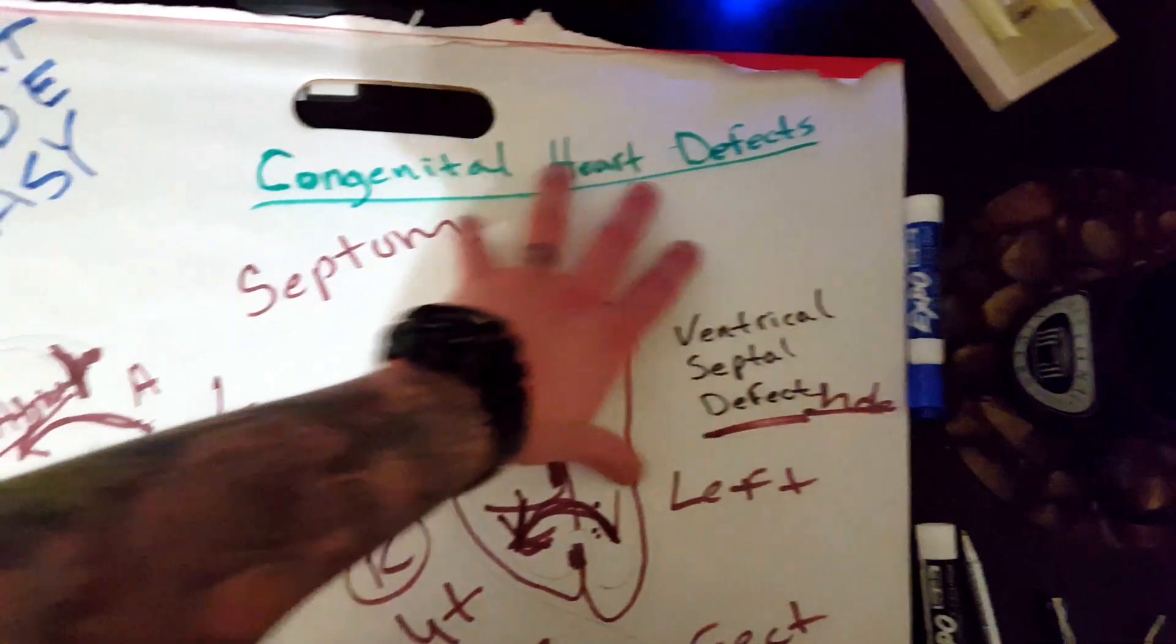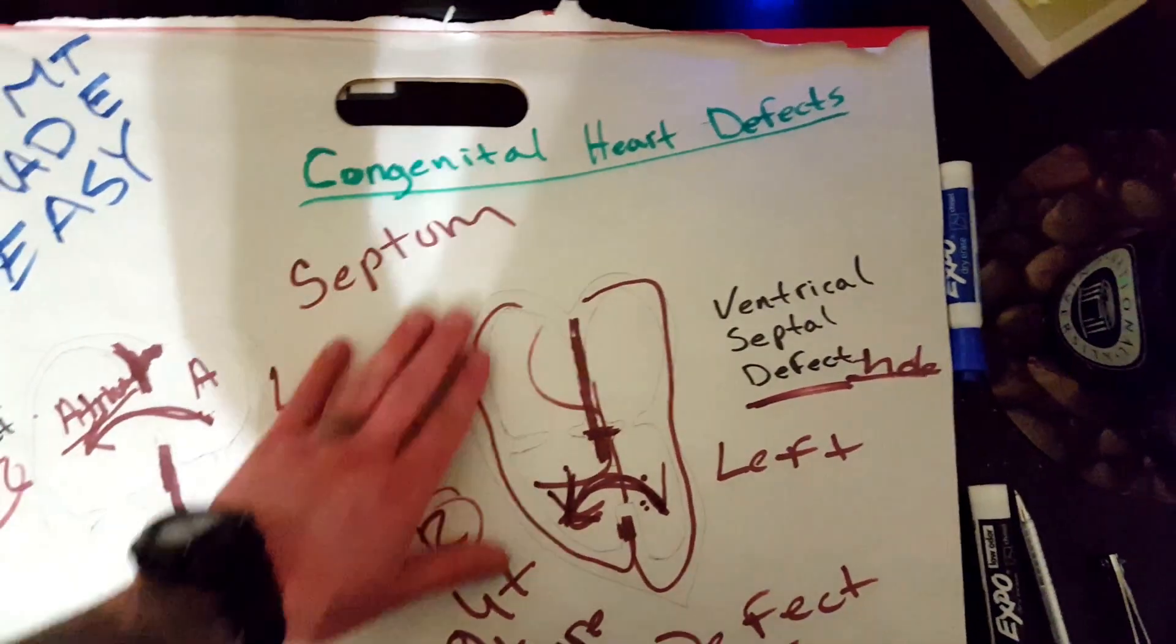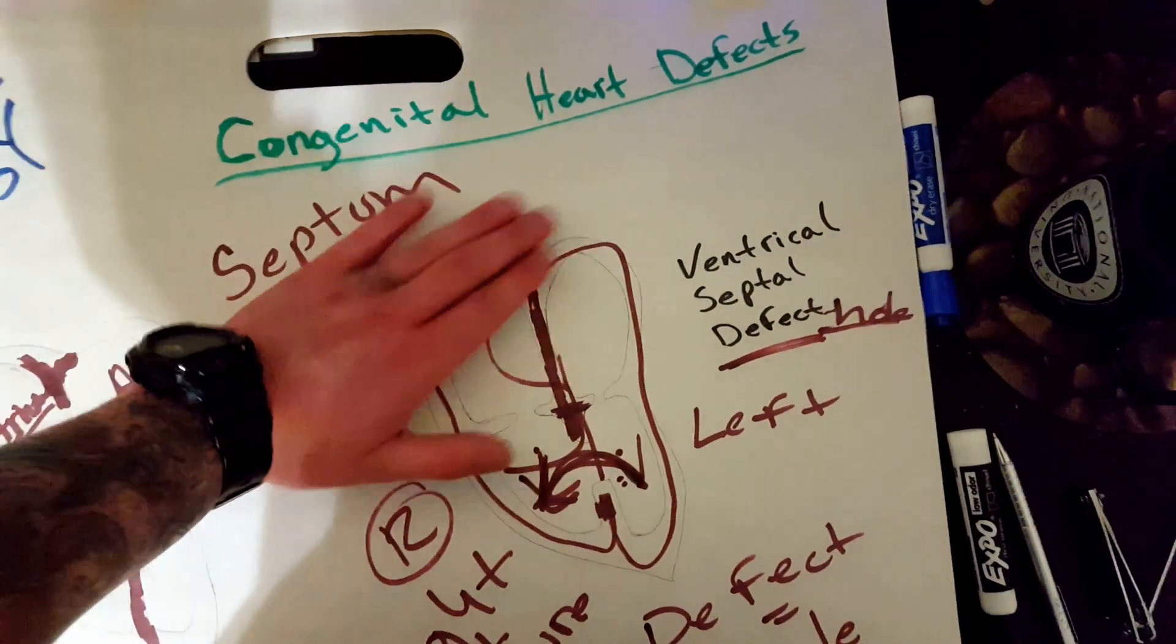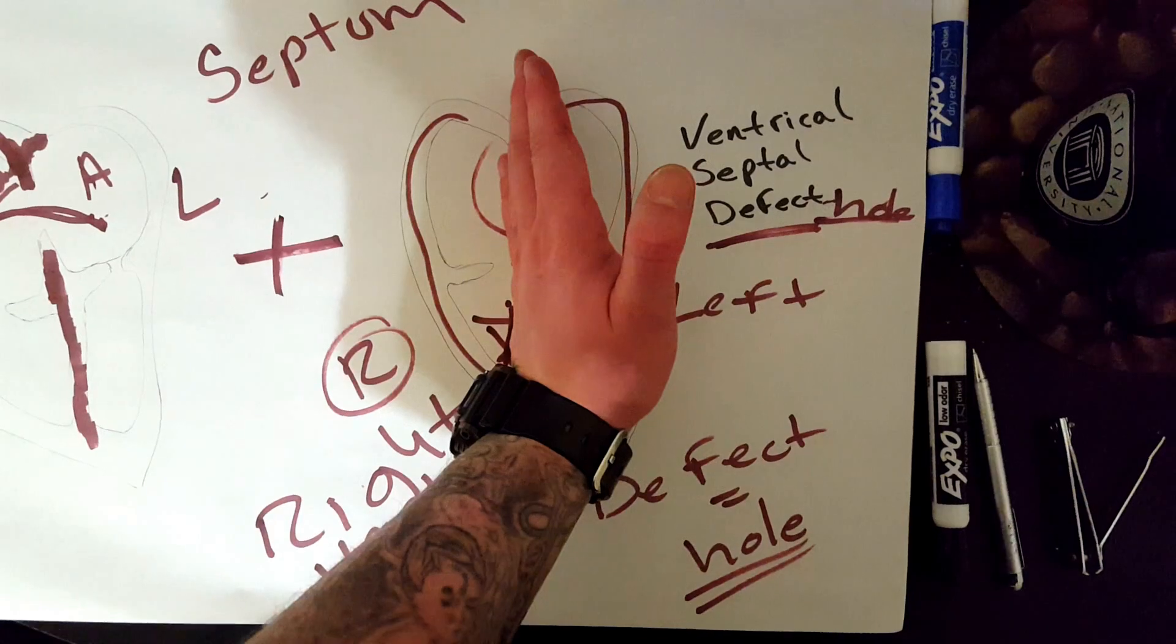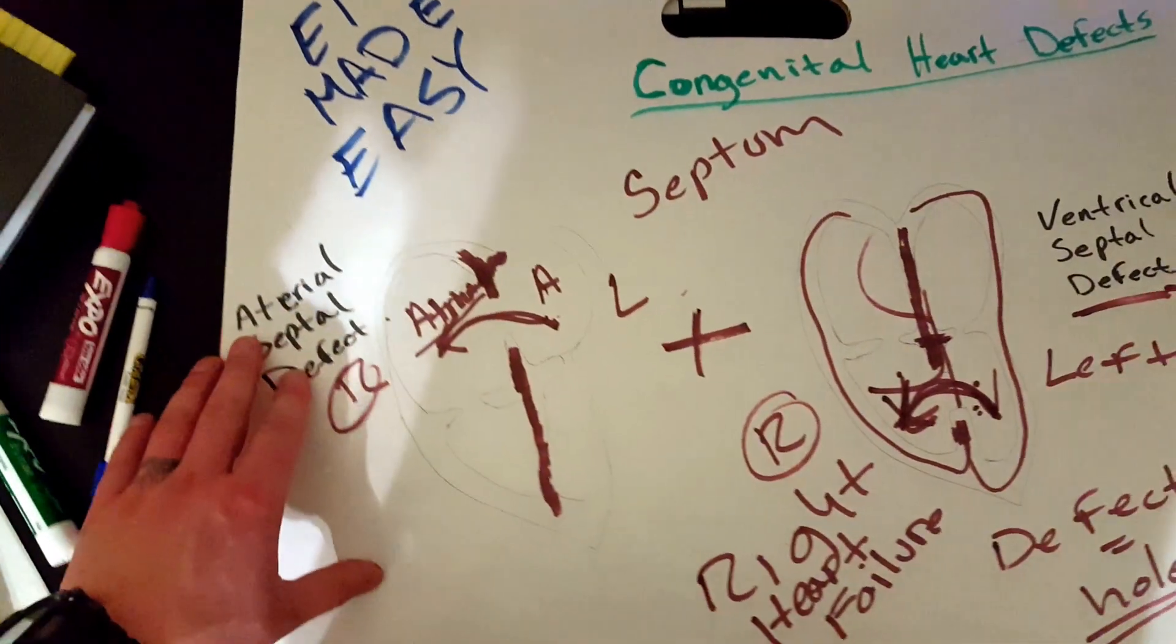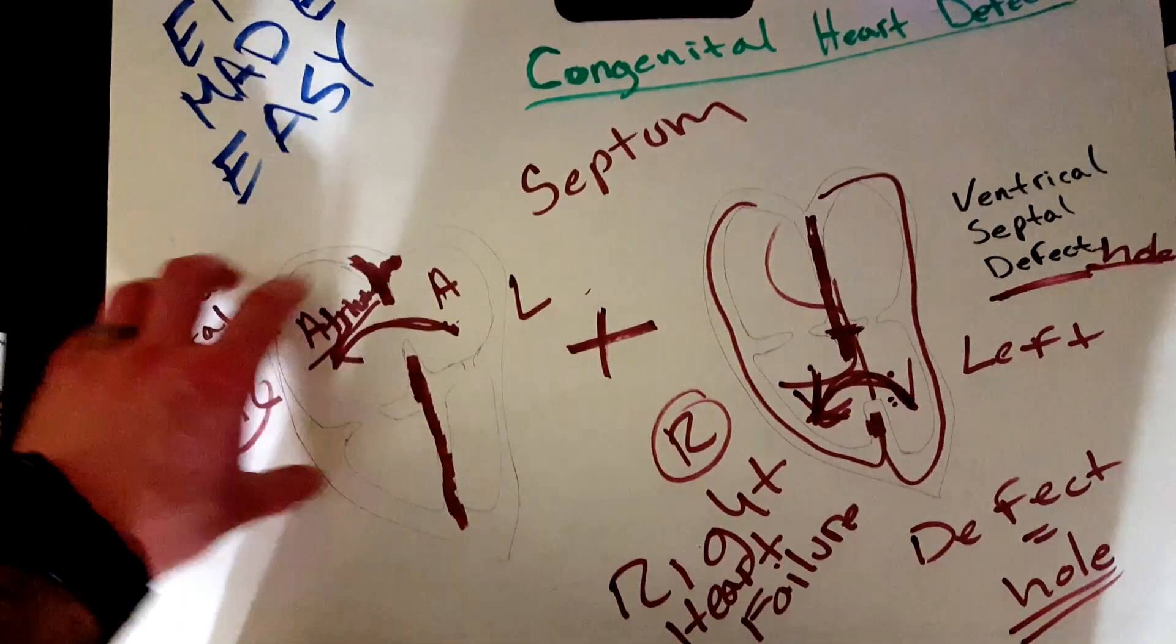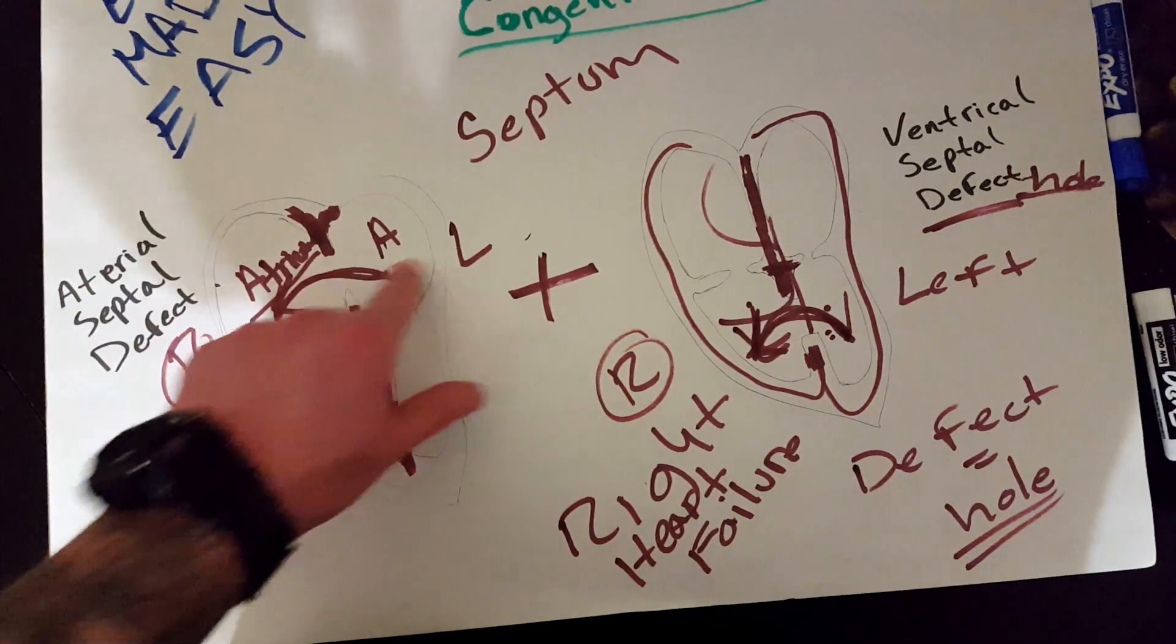Congenital heart defects. Congenital means at birth. So, the baby's going to have it. I'm only talking about three different kinds. The ones that you'll most likely see. And they affect the septum. What is the septum? It's the wall right in the middle of the heart that separates the left from the right. You have your atrial septal defect. Spell check me. I'm a horrible speller. So, it might not be right. But what I'm saying is correct. Your atrial septal defect just means there's a hole between the two atriums. That's all that means.